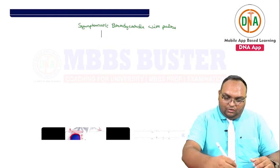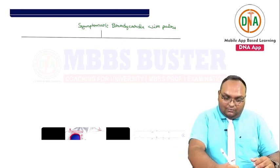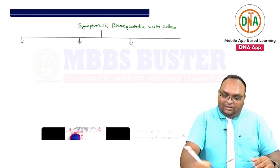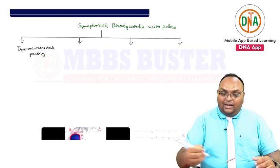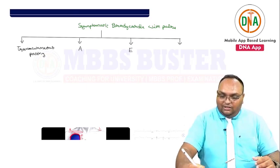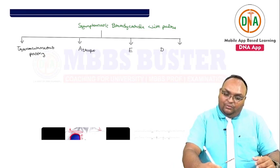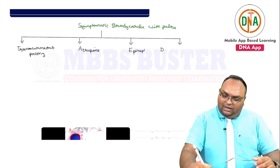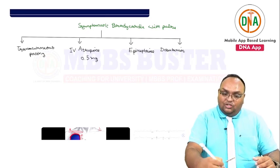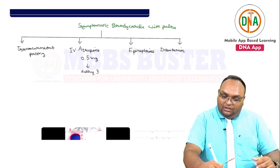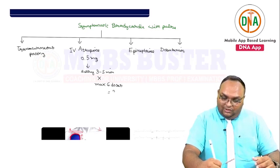For symptomatic bradycardia with pulse, there is one major intervention and three drugs. The major intervention is transcutaneous pacing. The mnemonic for the drugs is AED — not Automated External Defibrillator, but Atropine, Epinephrine, and Dobutamine, all given IV. Atropine dose: 0.5 mg IV, with a maximum of six doses given every three to five minutes, for a maximum total of 3 mg.